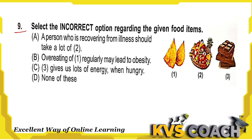Question 9: Select the incorrect option regarding the given food items — samosa, fruits, and chocolate. A person recovering from illness should eat a lot of fruits — correct. Overeating samosa regularly may lead to obesity — correct. Chocolate gives lots of energy when hungry — correct, as it is made of cocoa and milk. So none of these are incorrect. Option D is the right answer.